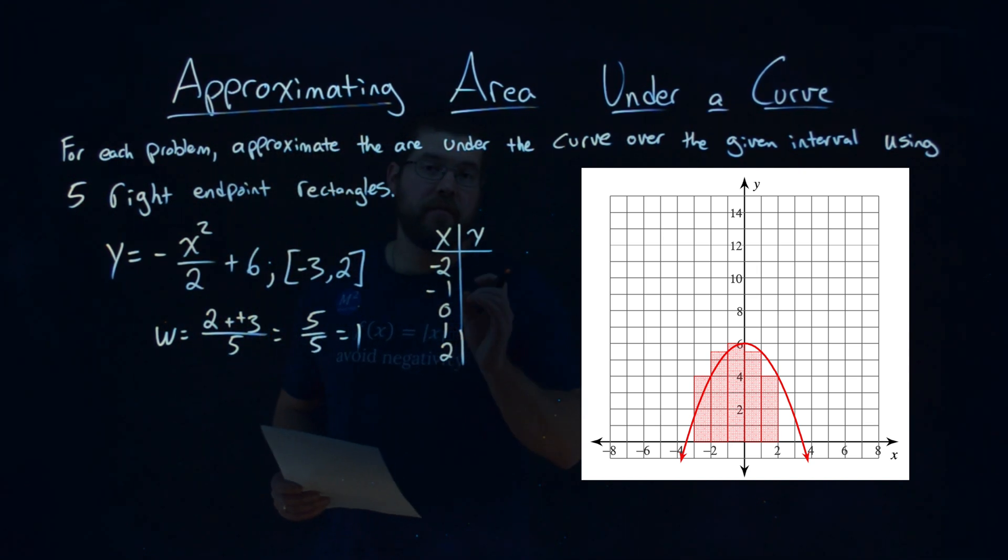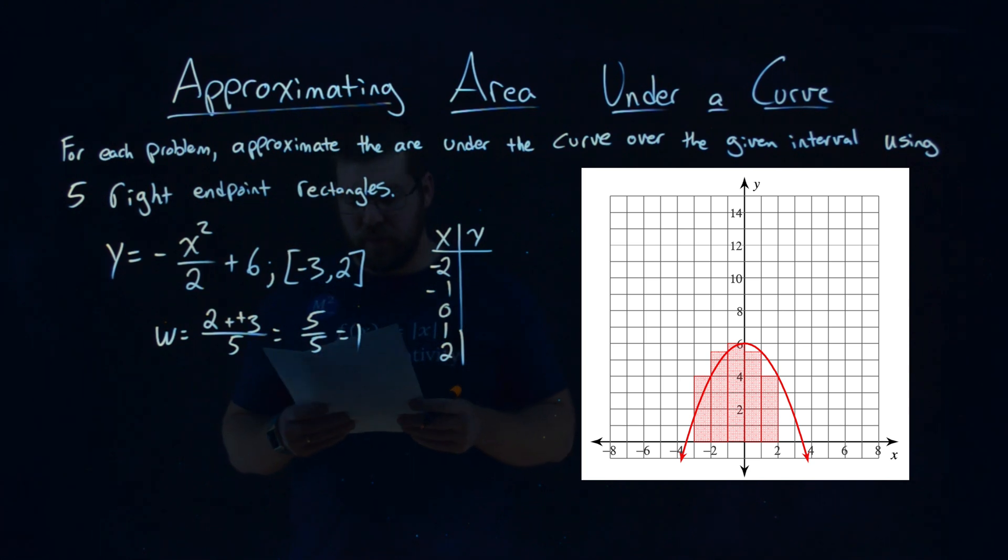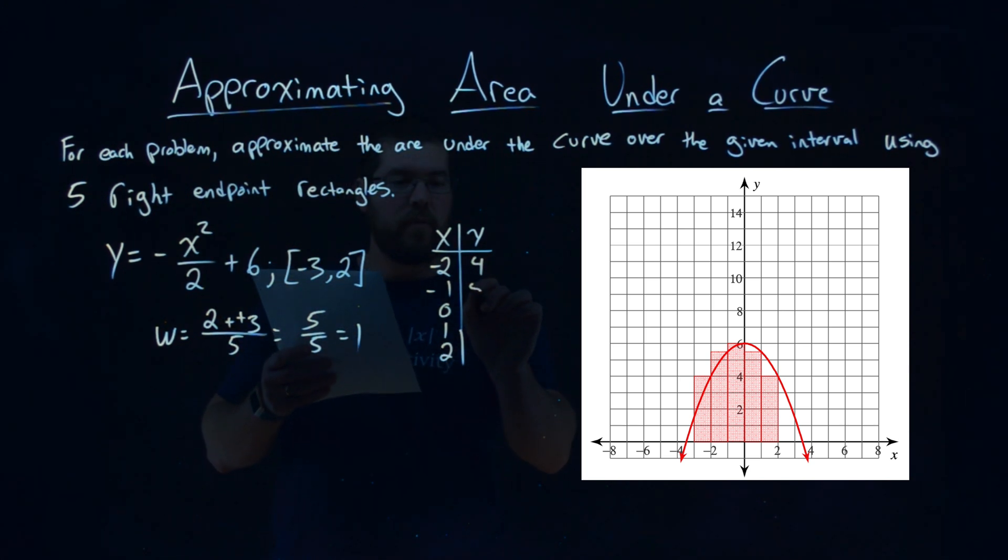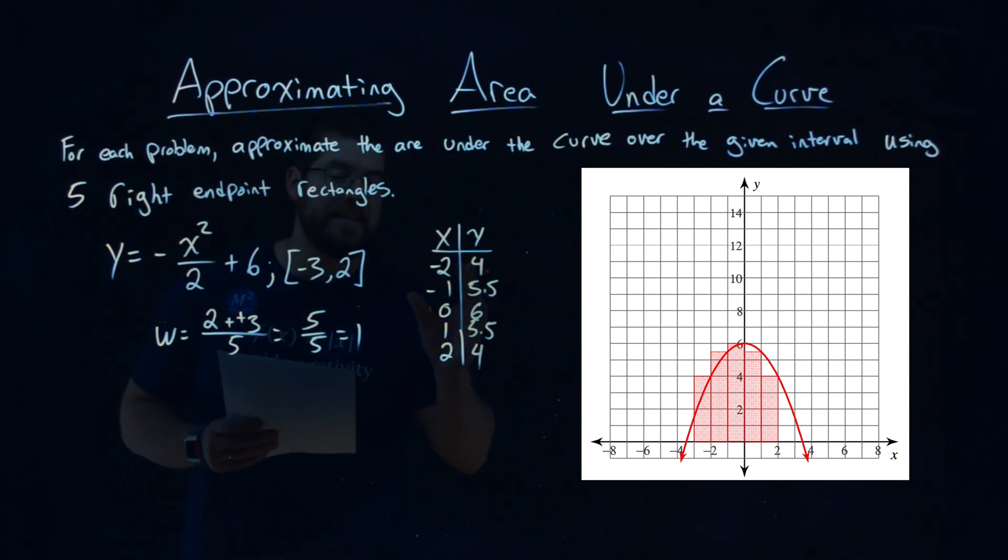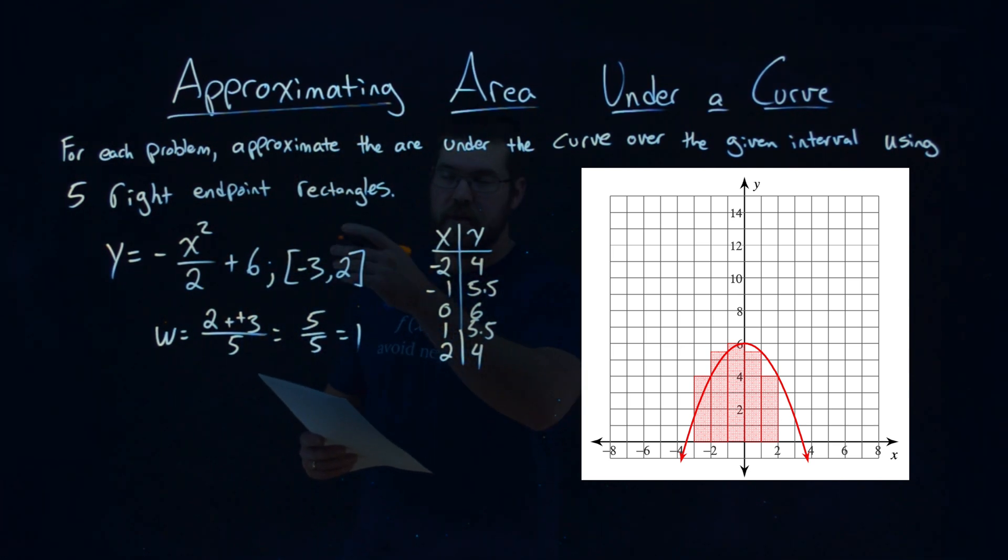With that, we need to find the height of the rectangle at each right endpoint. So we take that negative 2 and plug it back into our original equation, and we get 4. Negative 1 goes in, we get 5.5. 0 goes in, we get 6. 1 goes in, we get 5.5. And 2 goes in, and we get 4. That's the output of each one of our inputs into our equation.